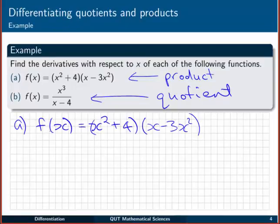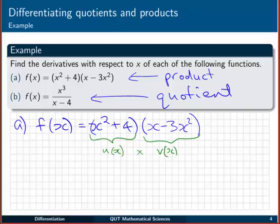Okay, so the first one here, f(x) equals (x² + 4)(x - 3x²). Now the key to using the product rule, and the quotient rule for that matter, is identifying what those functions u and v are. So I'm going to let u be x² + 4, and v be x - 3x². So that we've got u multiplied by v is f(x). Now you can switch those around, do whatever you like there, but basically it's going to come down to the same thing.